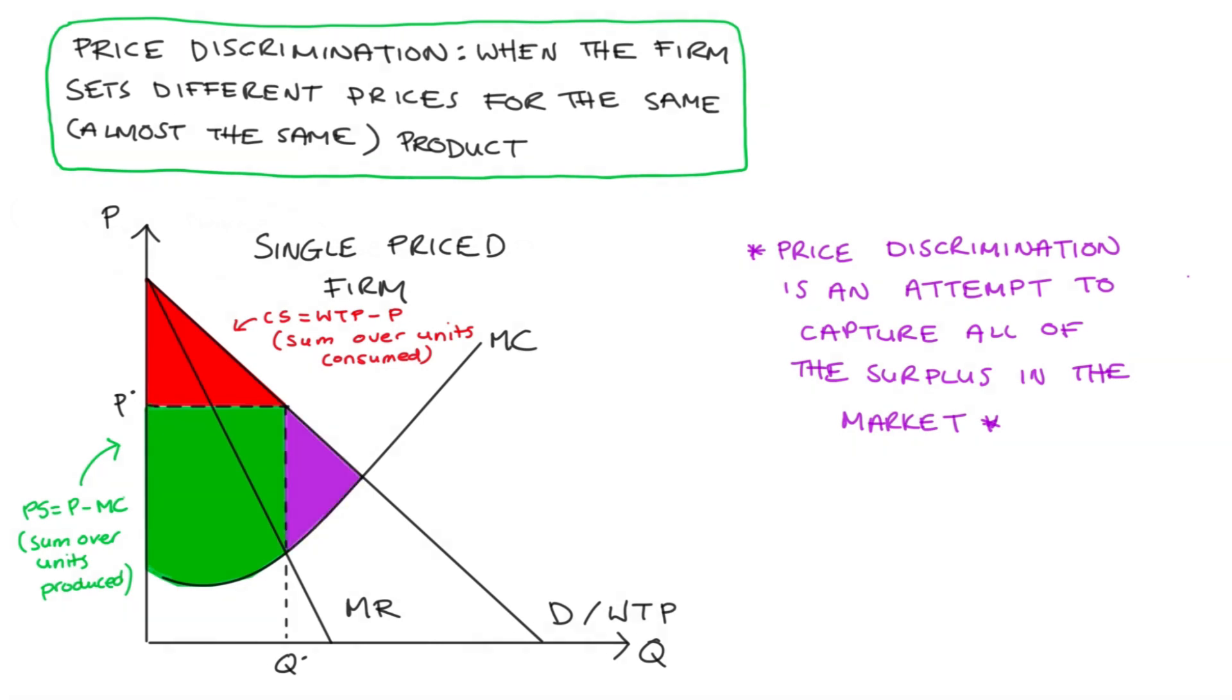And this area here, the purple area, is deadweight loss. This is the possible surplus that has not been realized in this market, essentially because the price has been set above marginal cost. So I do have another video just on deadweight loss and surplus. I'll link to it in the description below, just in case you need additional explanation around this. So that's the distribution of surplus when we have a single priced firm.